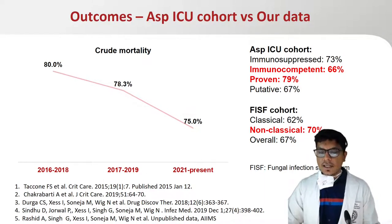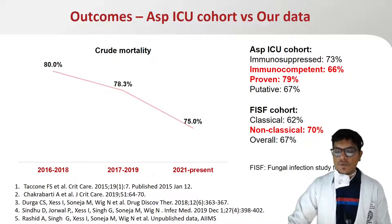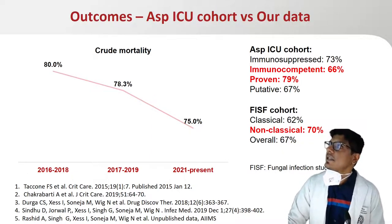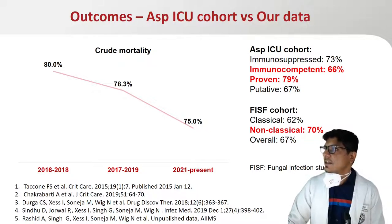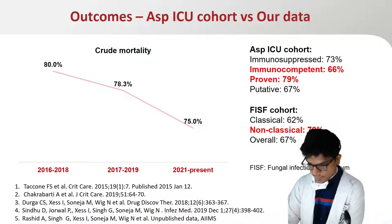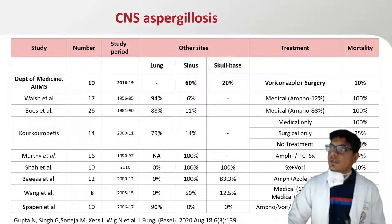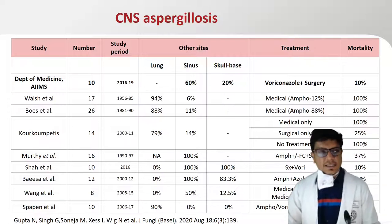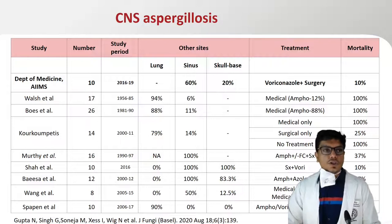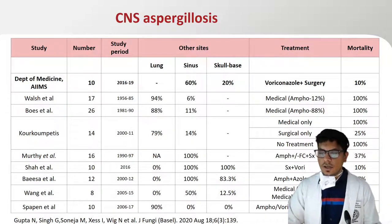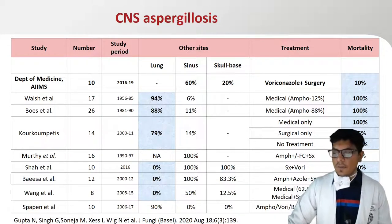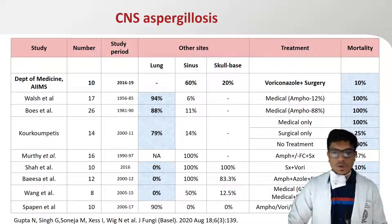Overall crude mortality has been quite high in our cohort. Over the last five to six years with increasing recognition, there is around 5% reduction from 80% to around 75%. The ASPICU cohort and FISF cohort with non-classical populations both showed mortality rates around 70%. Regarding CNS aspergillosis, we reported a series of 10 immunocompetent patients with predominantly isolated CNS involvement or concomitant sinus or skull base involvement. Most were managed medically, only three required surgery, and mortality was quite low at only 10%. Patients with concomitant lung involvement tend to have higher mortality compared to those with isolated CNS involvement.